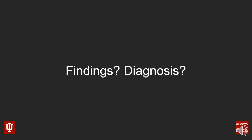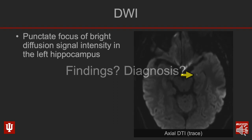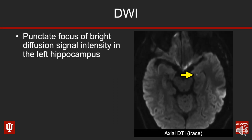Okay, so what are the findings and what's the diagnosis? Let's start with our imaging. First up, we have our axial diffusion weighted imaging, and you'll see that we have a punctate focus of bright diffusion signal intensity that is centered in the left hippocampus, as denoted here by the yellow arrow.